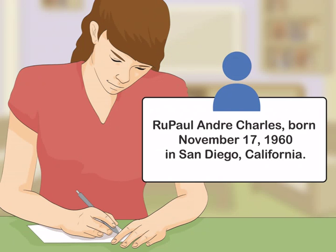Discussing early life and childhood. Mention the person's name, birth date, and place of birth. Start by including key biographical details like the person's full name and their birth date. You can also provide the person's place of birth, especially if it will give readers context for the rest of the biography.